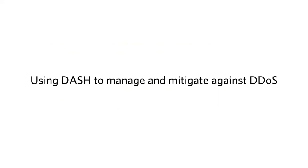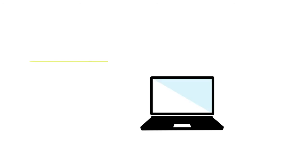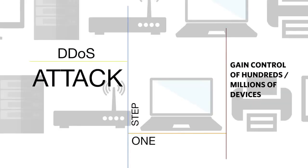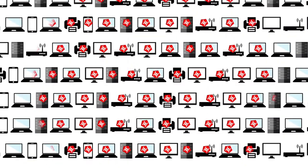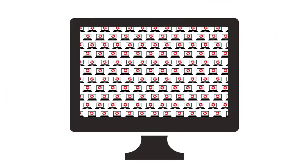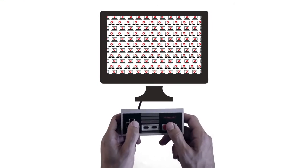One example of how you might use DASH is to monitor for and mitigate against your network being involved in distributed denial of service attacks. The first step of a DDoS attack is to gain control of hundreds, sometimes millions, of computers, servers and other online devices using malware, turning each device into a bot which the attacker has control over.